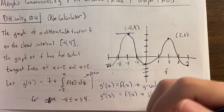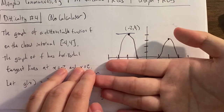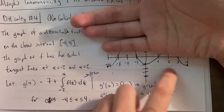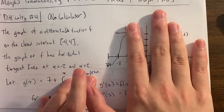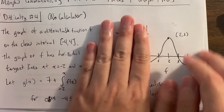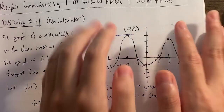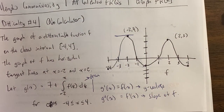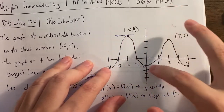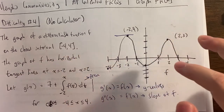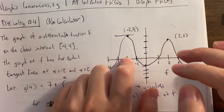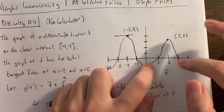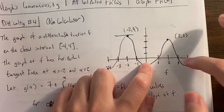G is increasing when g prime equals f is positive — so from negative 3 to negative 1 and 1 to 3. G is decreasing when g prime equals f is negative — negative 4 to negative 3, negative 1 to 1, and 3 to 4. G is concave up when g prime equals f is increasing: negative 4 to negative 2, and 0 to 2. G is concave down when g prime equals f is decreasing: negative 2 to 0 and 2 to 4. G has a relative min when g prime equals f goes from negative to positive — at negative 3 and 1. G has a relative max when g prime equals f goes from positive to negative — at negative 1 and 3.